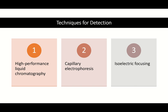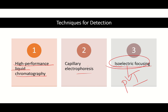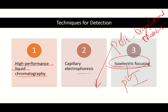The techniques to detect CDT levels are high-performance liquid chromatography (HPLC), capillary electrophoresis, and isoelectric focusing. Isoelectric focusing separates proteins based on their isoelectric pH. Different glycoforms of transferrin have different isoelectric pH, so we can detect them. Isoelectric focusing can differentiate different post-translational modifications of a protein; however, the best technique to detect post-translational modifications is mass spectrometry.